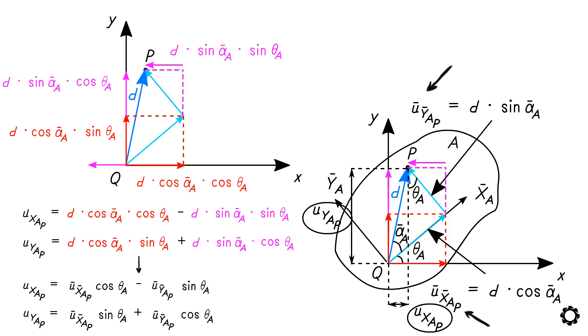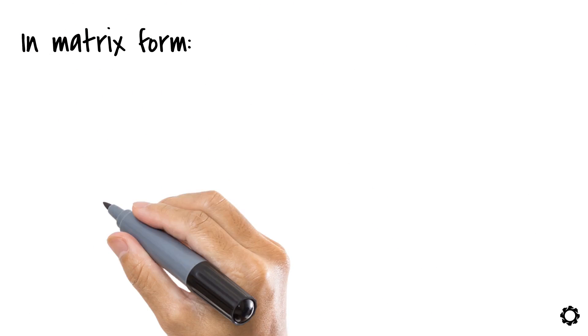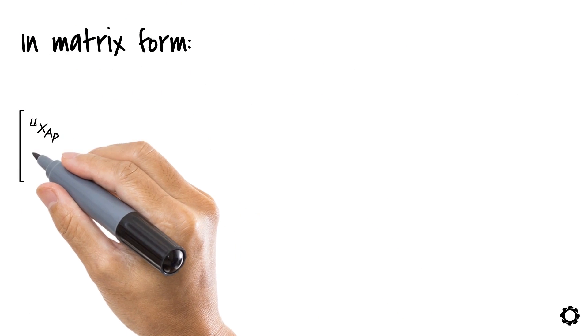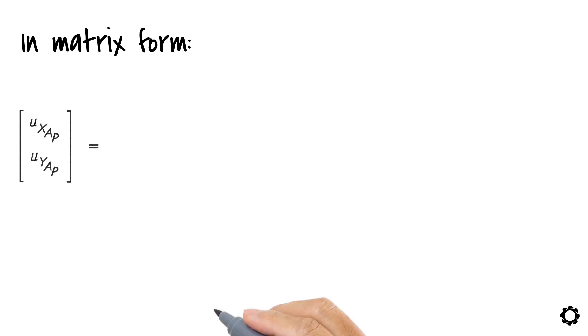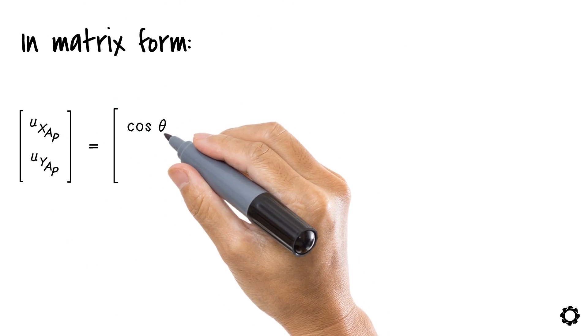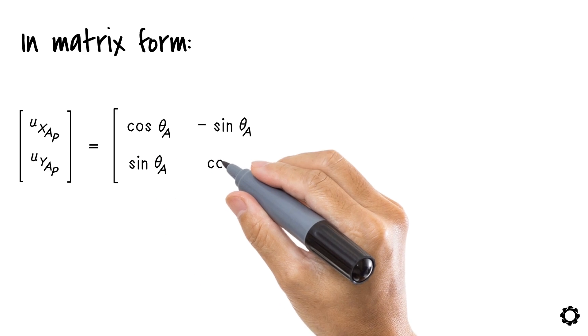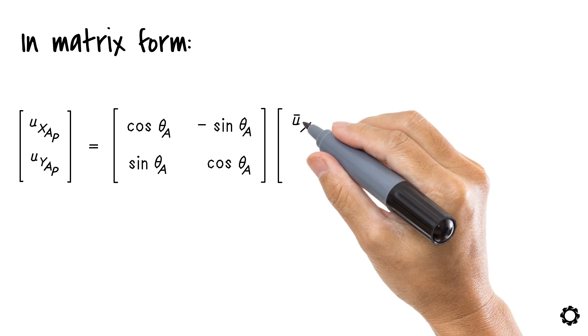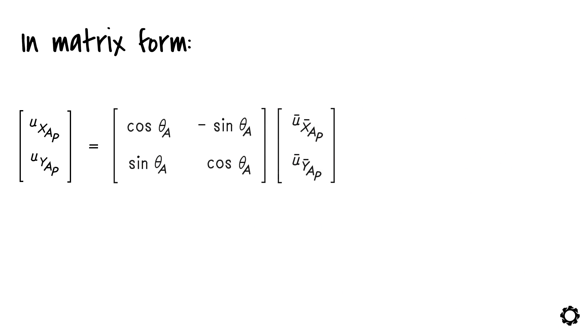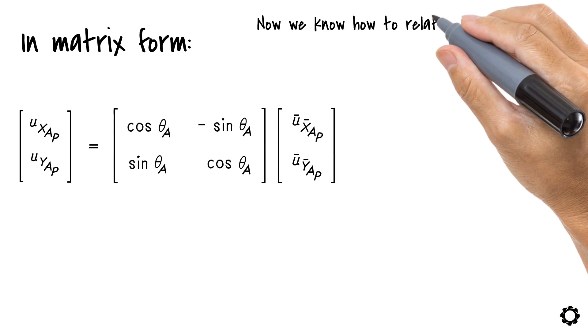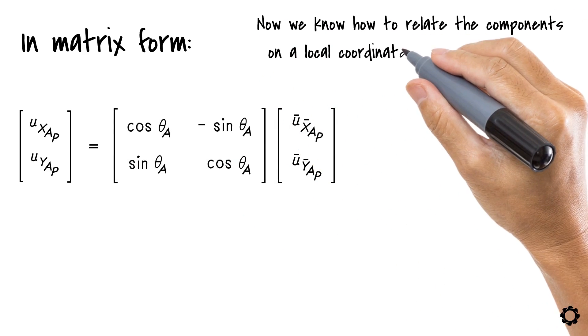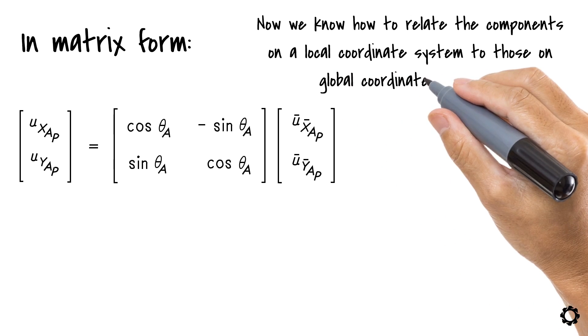Let's do more. Let's write it in matrix form. We get [u_x_ap; u_y_ap] equals [cos(θ_a), -sin(θ_a); sin(θ_a), cos(θ_a)] times [u̅_x̅_ap; u̅_ȳ_ap]. Now we know how to relate the components on a local coordinate system to those on a global coordinate system.